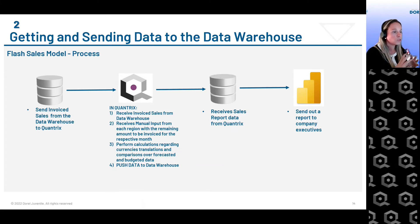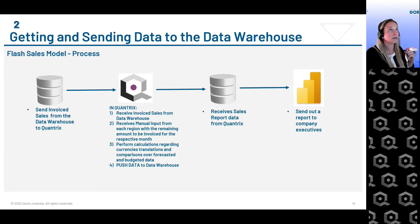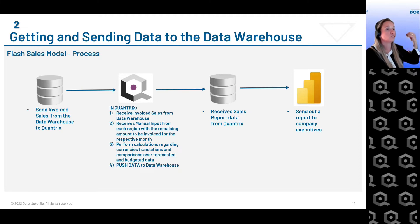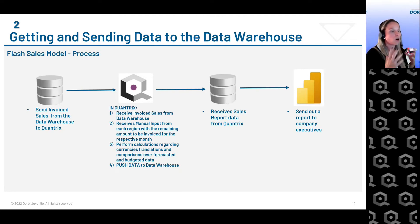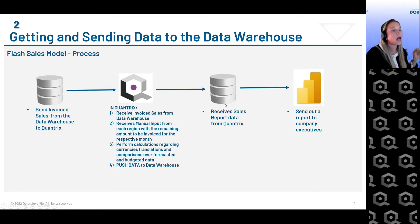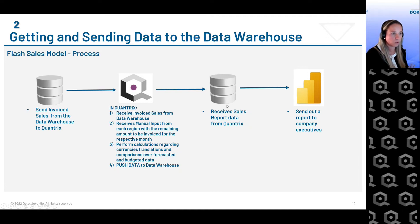Once we have the invoiced and to-be-invoiced data, we do comparisons with forecast, budget, and prior year. We also do currency translations to US dollars for some divisions — for example, in Europe we have entities in various currencies that need to be translated to euros and then to US dollars. We do all these transformations in Quantrix. Then we push that transformed data back to our data warehouse, and Quantrix feeds a specific table there so we can generate Power BI dashboards for executives.